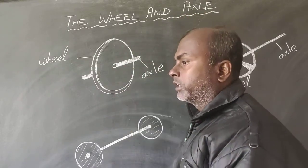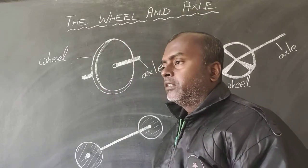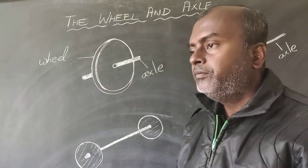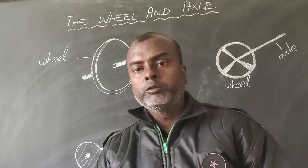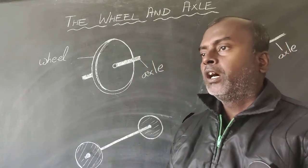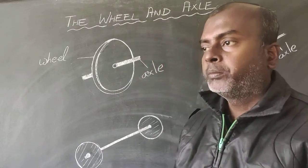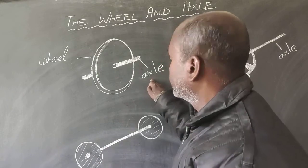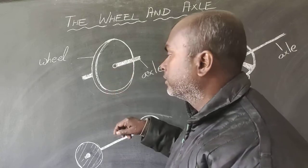This is how a normal wheel looks like. The wheel has to have a support on which it turns. The object which gives support to the wheel is called the axle. The whole wheel is fixed on this axle.